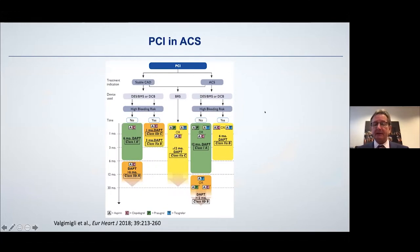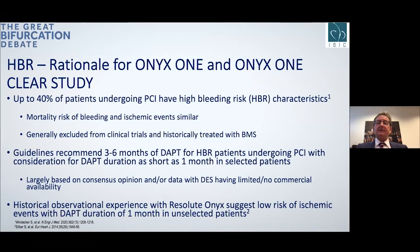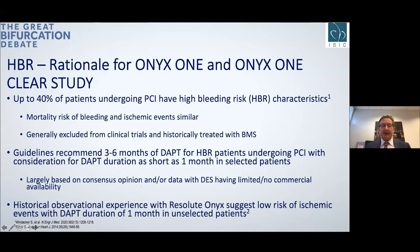Acute coronary syndrome is a very important topic, especially in Asia where many patients present with ACS. If there is no high bleeding risk, you can go up to 12 months with dual antiplatelet therapy. If the patient has high bleeding risk, you could go up to three to six months. The question was whether specific stents might bring us to better results with a lower risk for bleeding, allowing us to be more efficient with a shorter treatment duration.